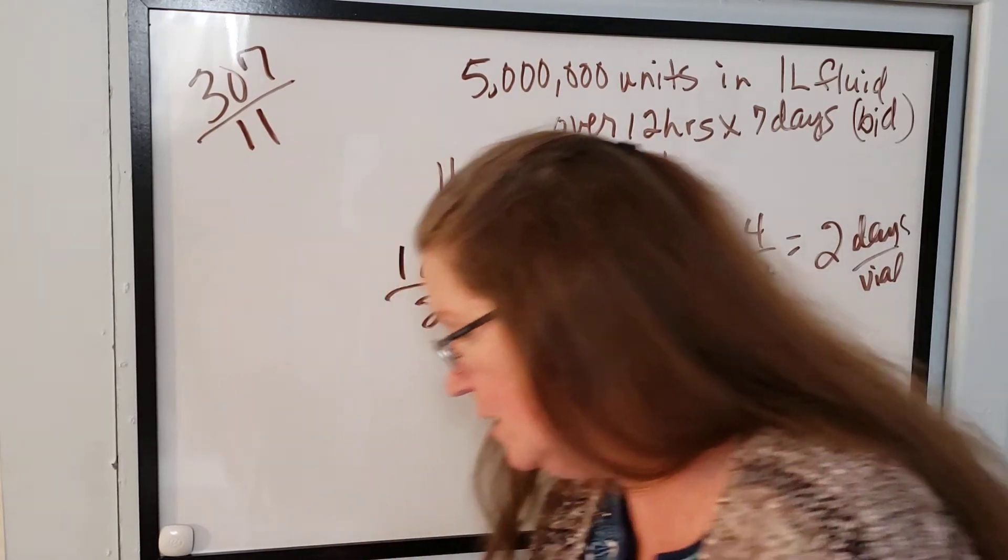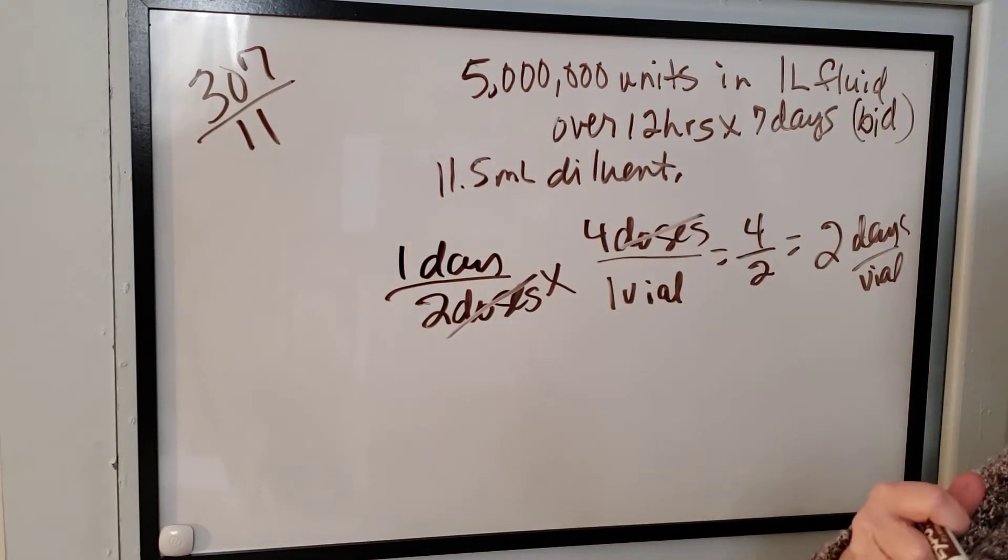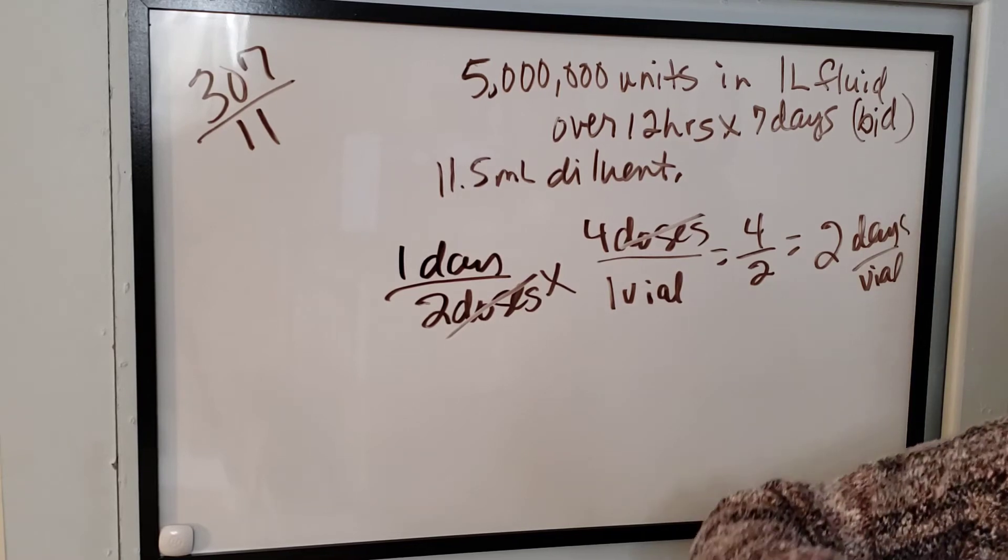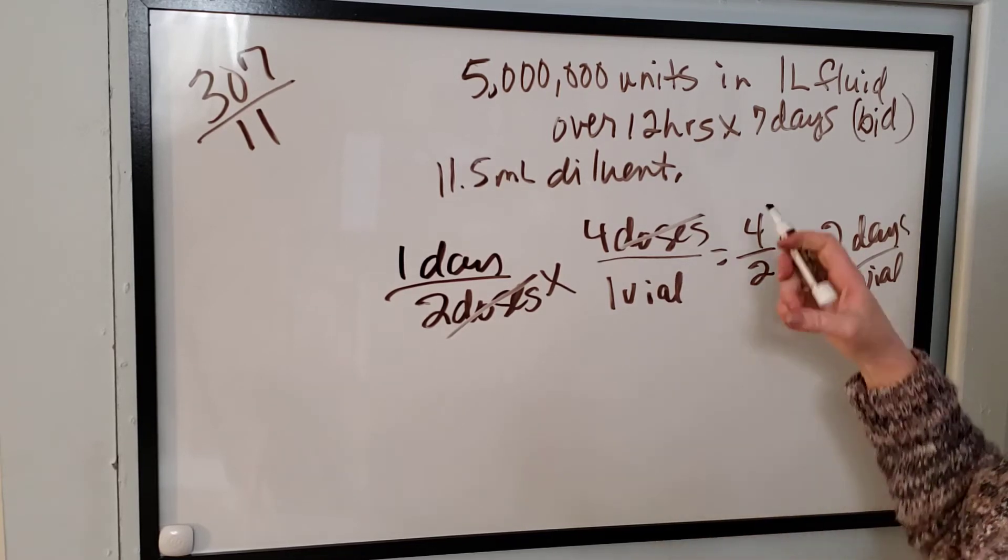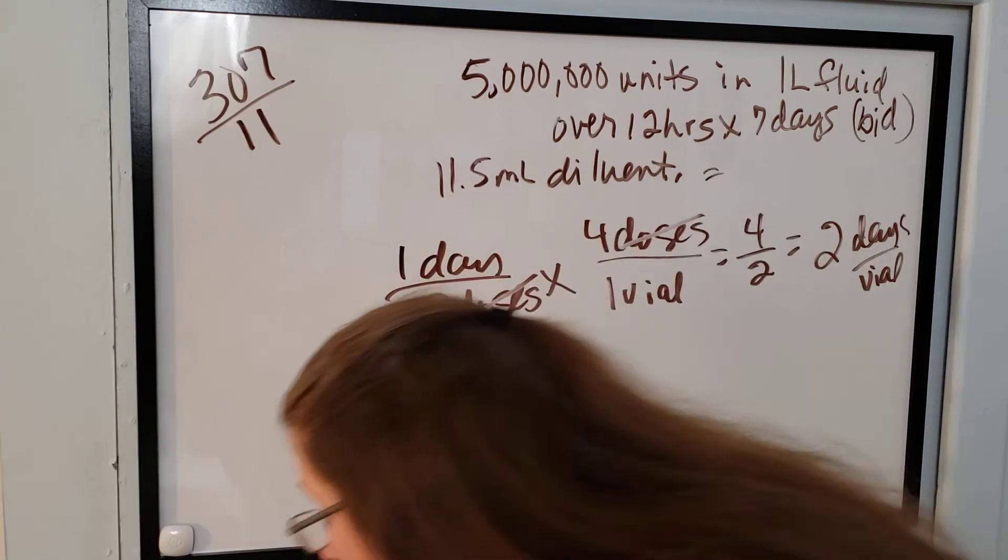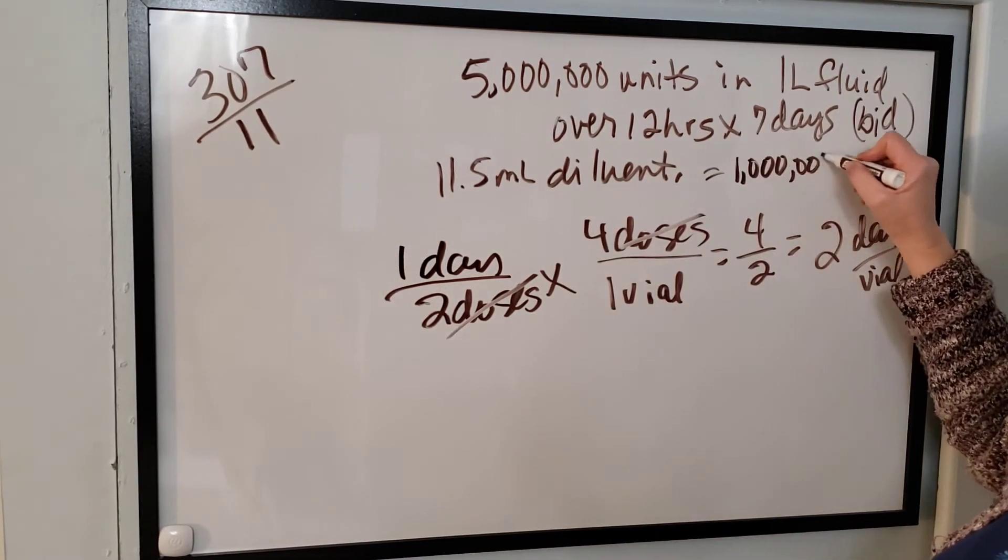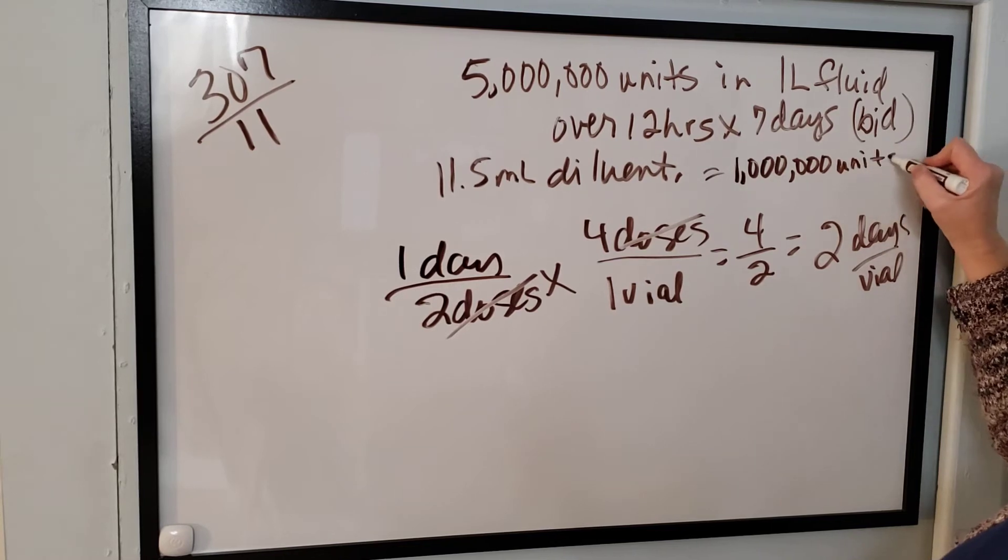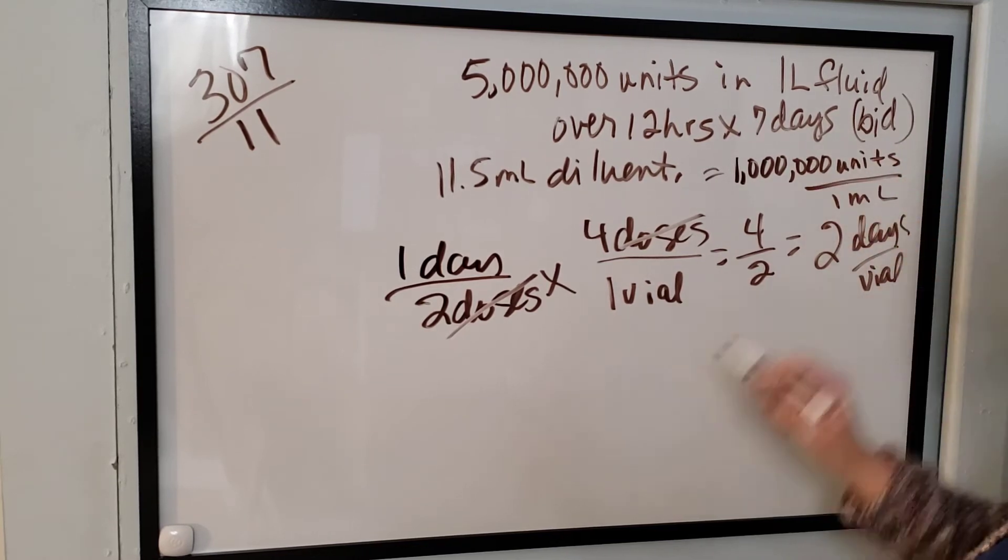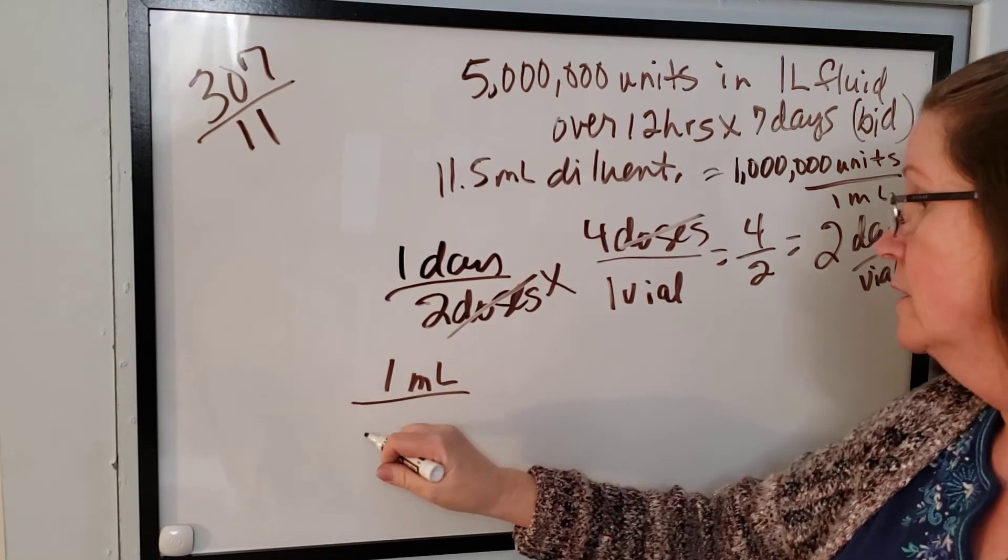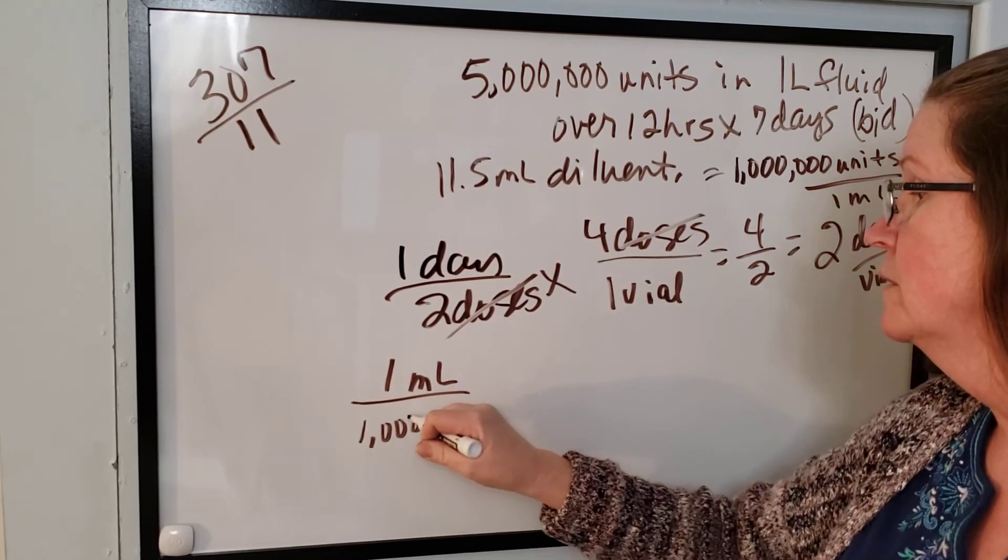So how many, what volume should be added to each liter? So remember you added the 11.5 milliliters of diluent, which is going to give you, yeah, that's a million. One million units of medication per milliliter. So over here, one ml is one million units.